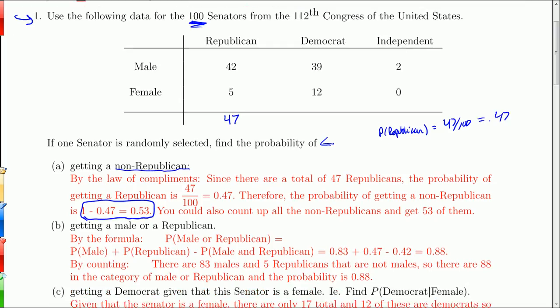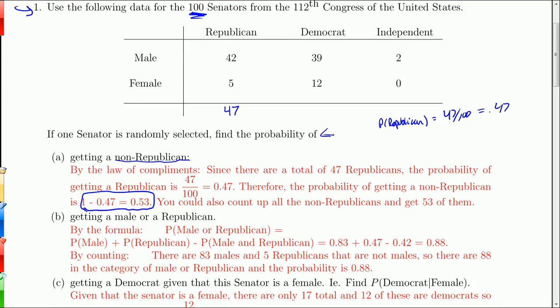Before getting into the next problems, I'm going to add some totals to the table. We have 51 Democrats, 2 independents, 17 females, and 83 males. Having these totals in just makes things a little easier.